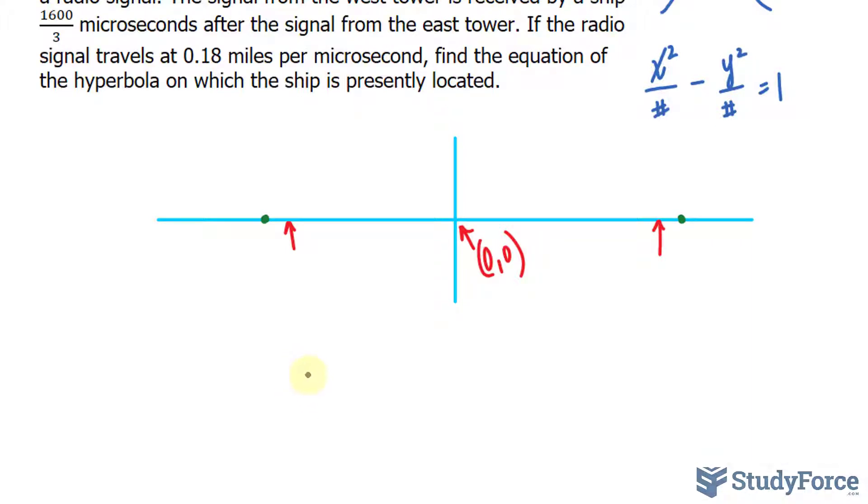I know the vertex will be here and here. And to find the focus when the transverse axis is horizontal, we use the relationship F1, let's call this F1, has the coordinates of H minus C, comma K, and focus 2 is H plus C, K, where H and K represent the coordinates of the center. So, I can replace this H with 0, this K with 0, 0, and 0.